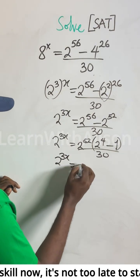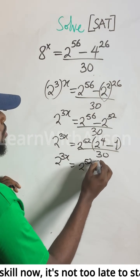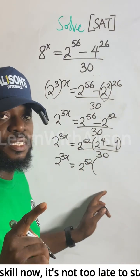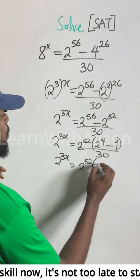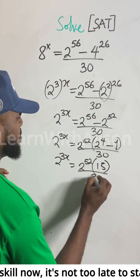The next step: 2 to the power of 52 times—2 to the power of 4 is 16, and 16 minus 1 gives us 15. So we have 15 divided by 30.